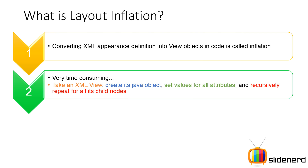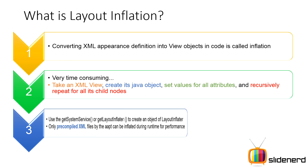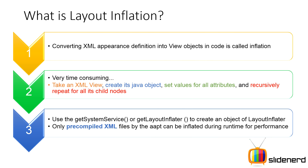I mentioned 'recursively' — what does that mean? Think about this: the TextView is a child inside your LinearLayout, so first the LinearLayout has to be converted, then it has to go inside every child of the LinearLayout recursively and convert them from XML to Java. That is why it's a very time-consuming and resource-intensive operation.